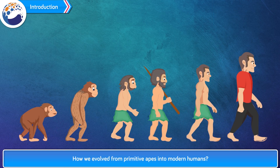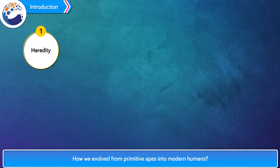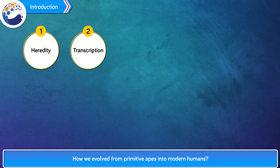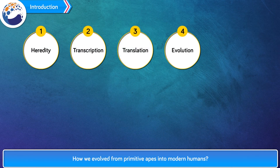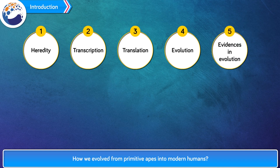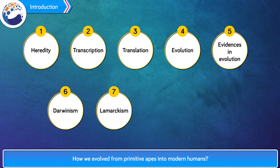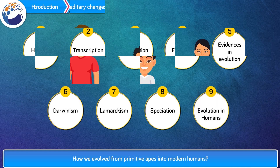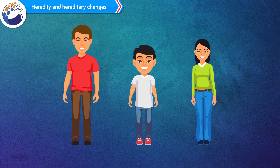At the end of the lesson, we will be able to understand the concepts of: 1. Heredity, 2. Transcription, 3. Translation, 4. Evolution, 5. Evidences in Evolution, 6. Darwinism, 7. Lamarckism, 8. Speciation, and 9. Evolution in Humans. Genes mediate the transfer of biological characters from parents to progeny.